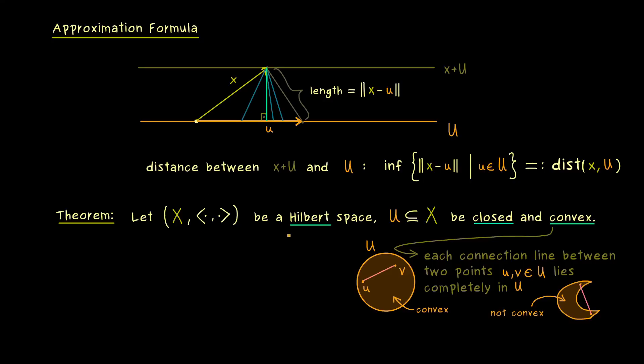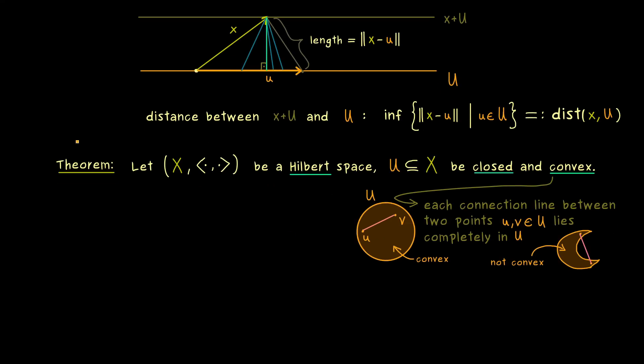Indeed, these are all the assumptions we need. And now we can talk about the claim of the theorem. It says that for every given vector x there exists a unique best approximation. So we have existence and uniqueness for this vector in the set U. And this is why I want to call this vector x restricted to U. And please never forget this is always an element in the set U. And moreover, now we know it's the element that minimizes the distance between x and the set U. Hence the length of x minus this best approximation is exactly this infimum, which we call the distance between x and U.